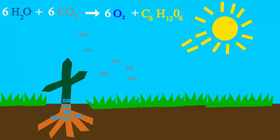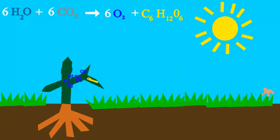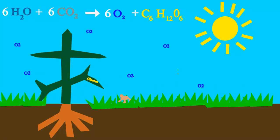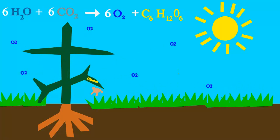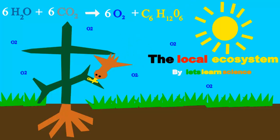Plants take water, sun and CO2 to make glucose, the sugar that they use for food. They also put oxygen into the air so we can share because oxygen is everywhere.